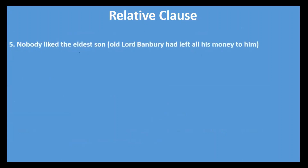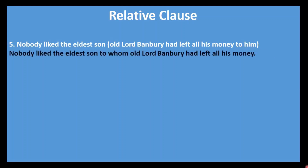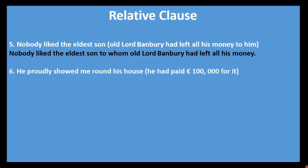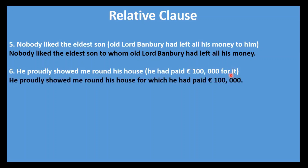Number five: Nobody liked the eldest son (Old Lord Bunbury had left all his money to him). The word 'him' refers to 'eldest son' and appears at the end with preposition 'to,' so 'to whom.' Answer: Nobody liked the eldest son to whom Old Lord Bunbury had left all his money. Number six: He proudly showed me round his house (he had paid £100,000 for it). 'It' refers to 'house' and appears at the end with preposition 'for,' so 'for which.' Answer: He proudly showed me round his house for which he had paid £100,000.